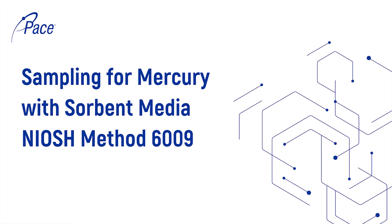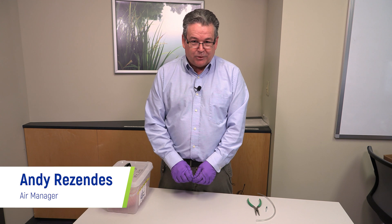Today we're going to be doing a short video on how to set up for sampling mercury in air via NIOSH method 6009.